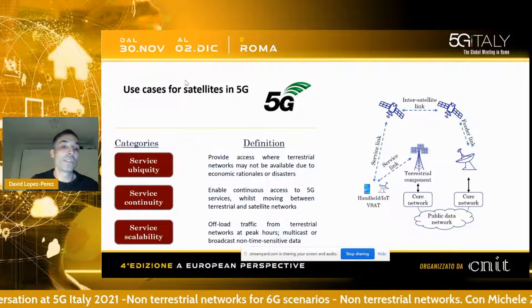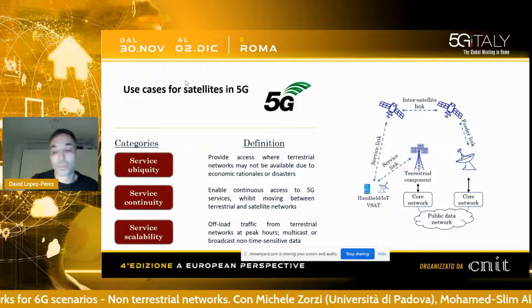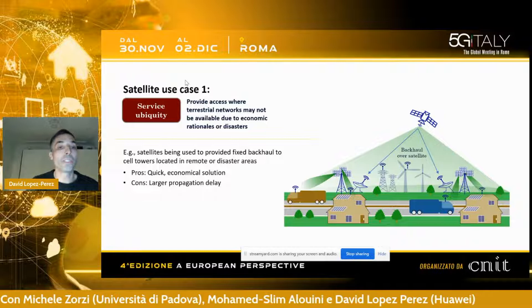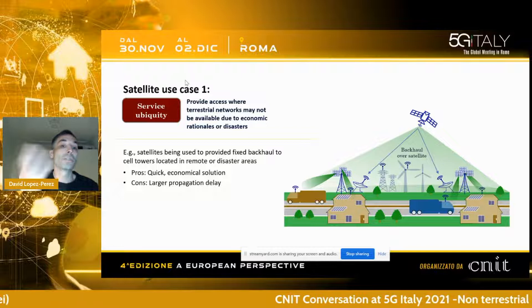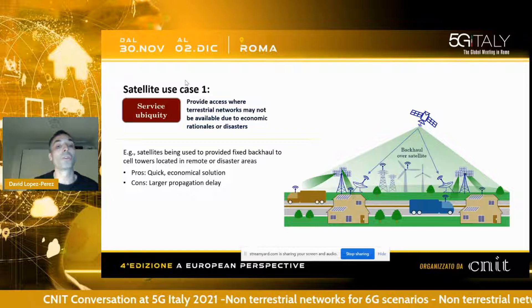These families are service ubiquity, service continuity, and service scalability. Service ubiquity attempts to provide access where terrestrial networks may not be able, due to economic reasons or due to disasters. Here you can think of satellites being used to provide fixed access or backhaul to cell towers located in remote areas or disaster zones.